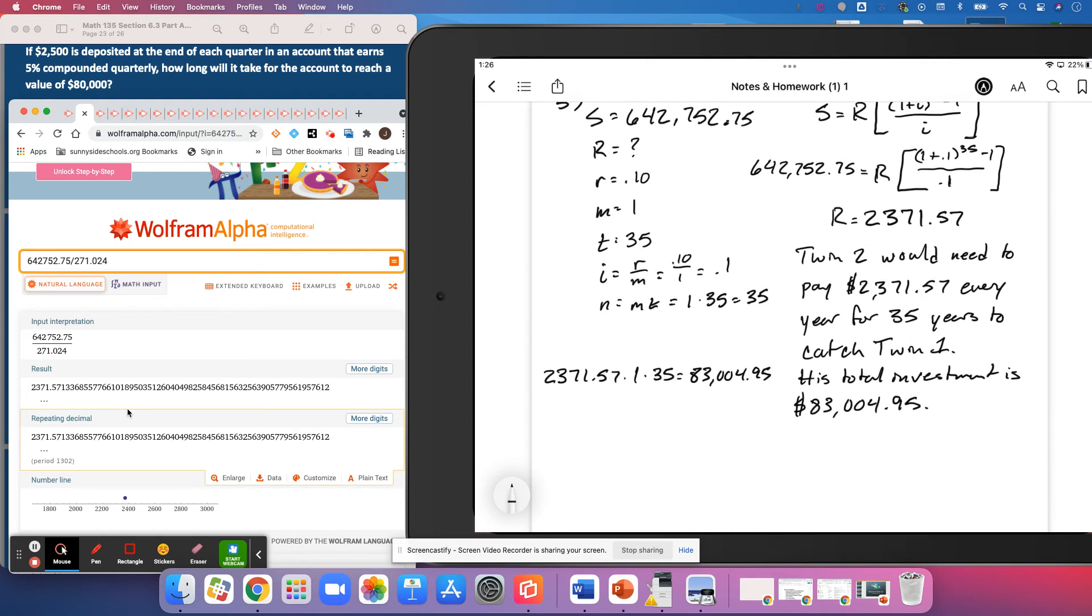And we were shooting for a total of $642,752.75. And so we can again see how much he gained by doing that. $642,752.75 minus $83,004.95. And so he gains $559,747.80 by doing this.